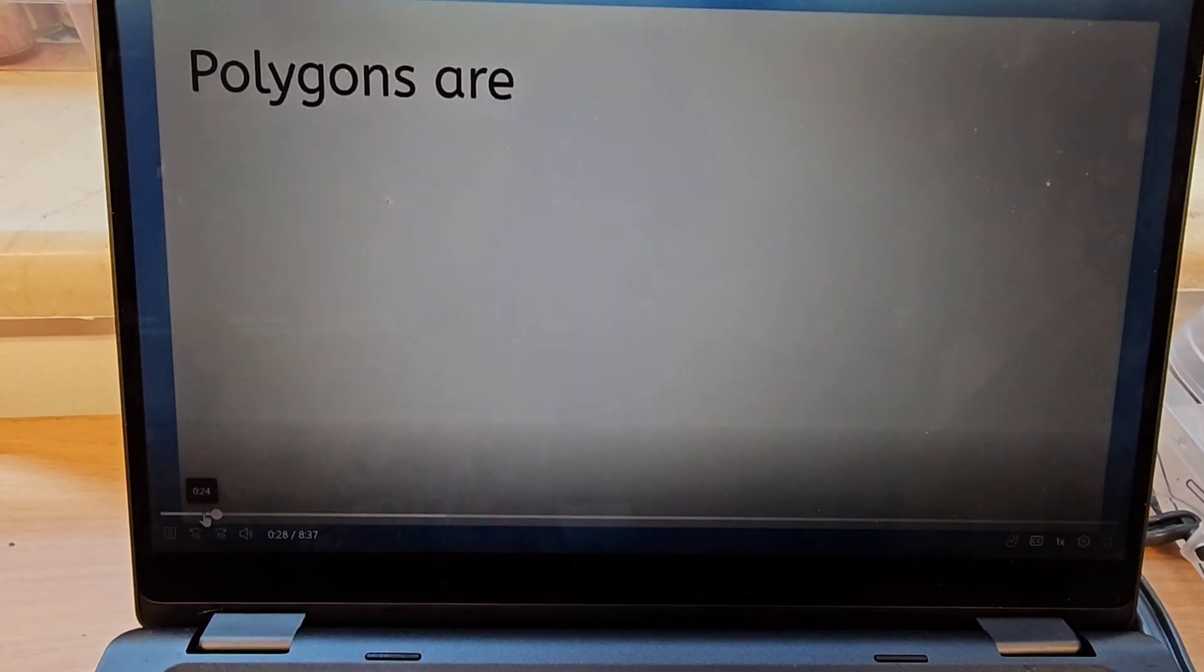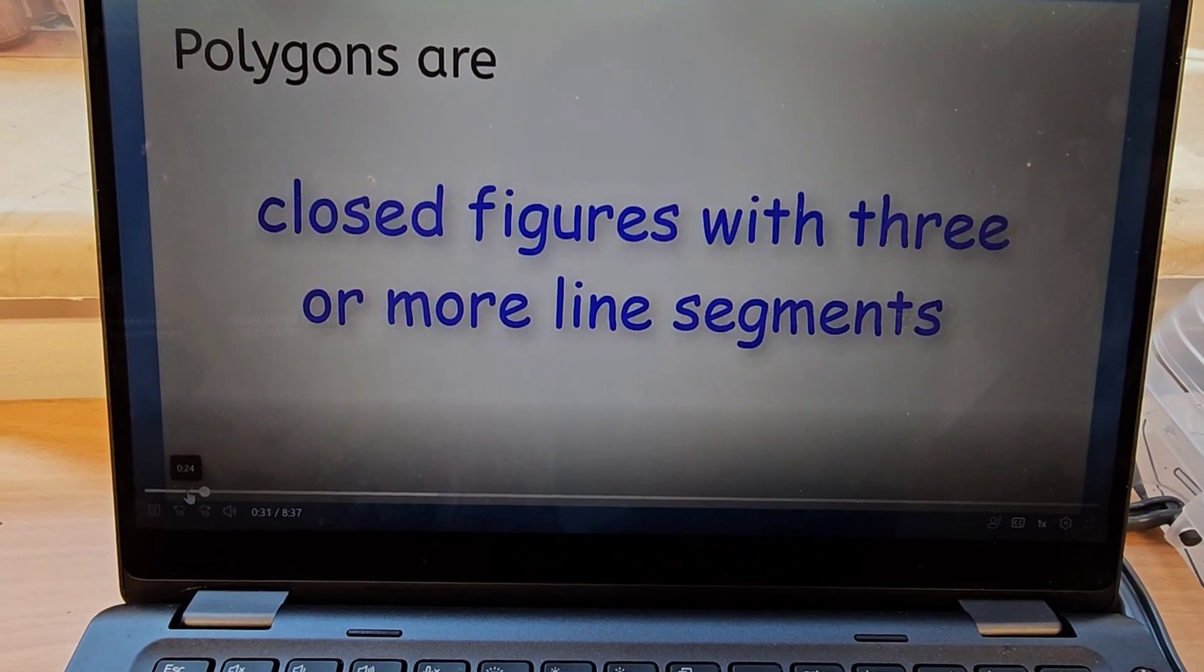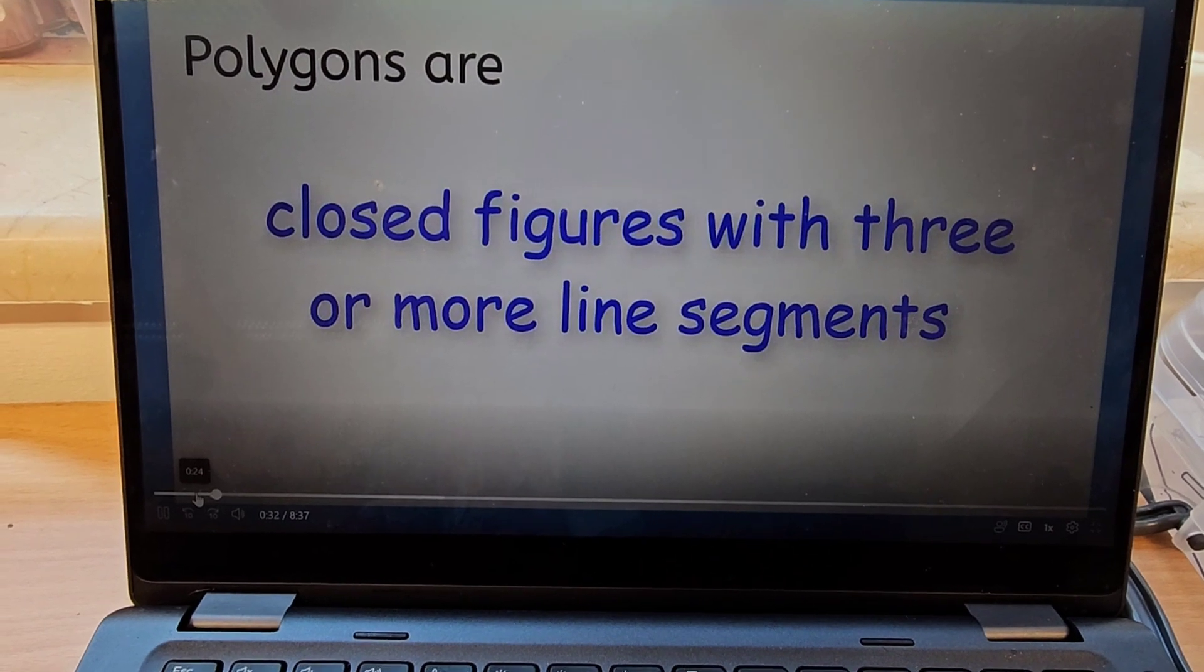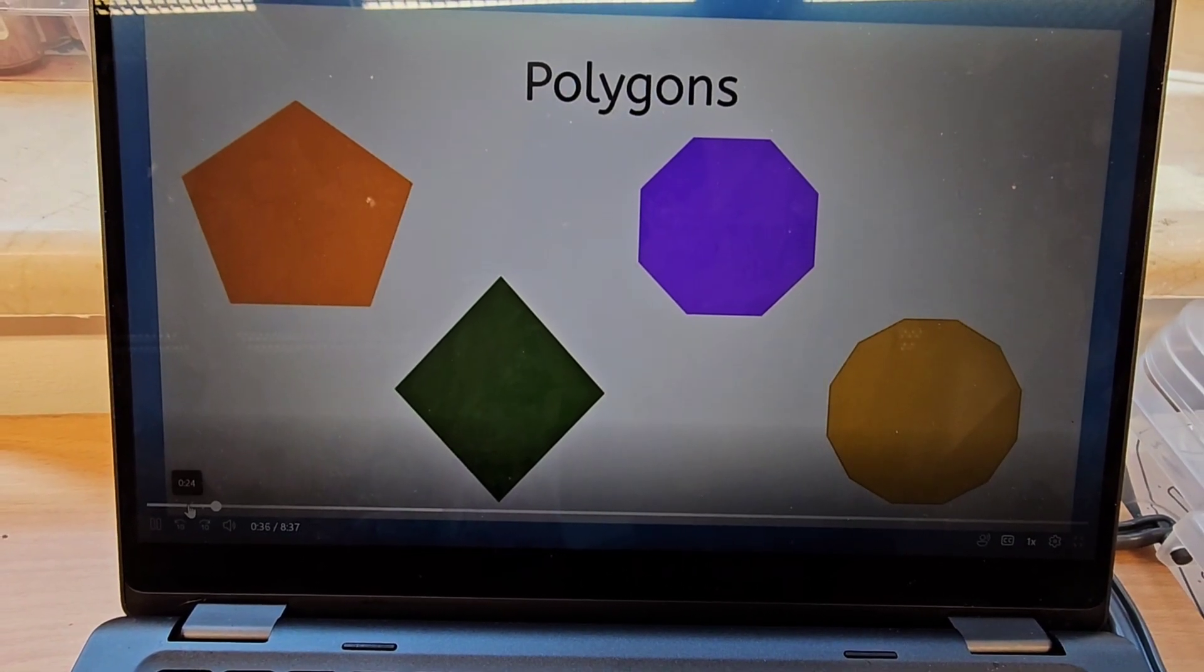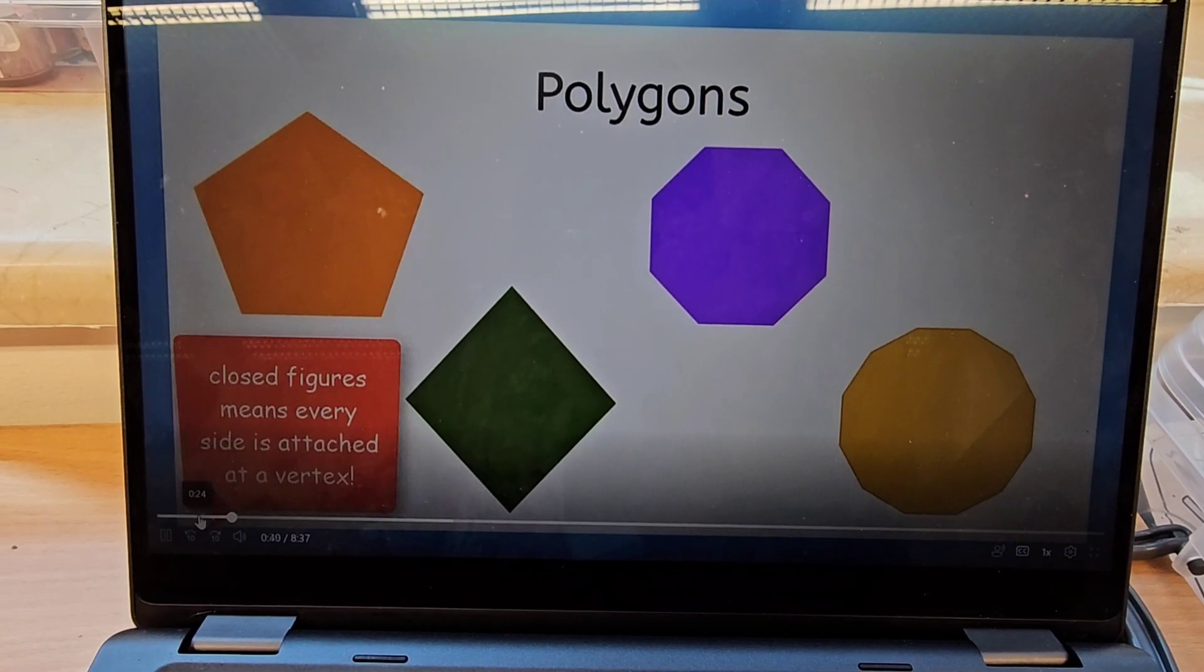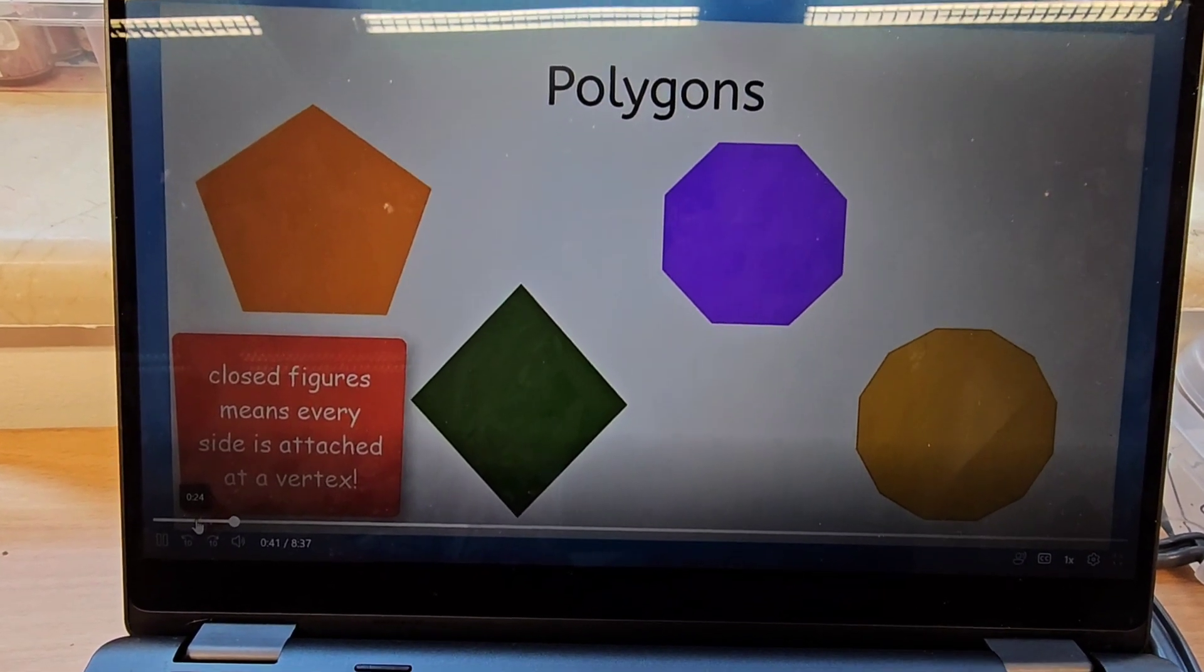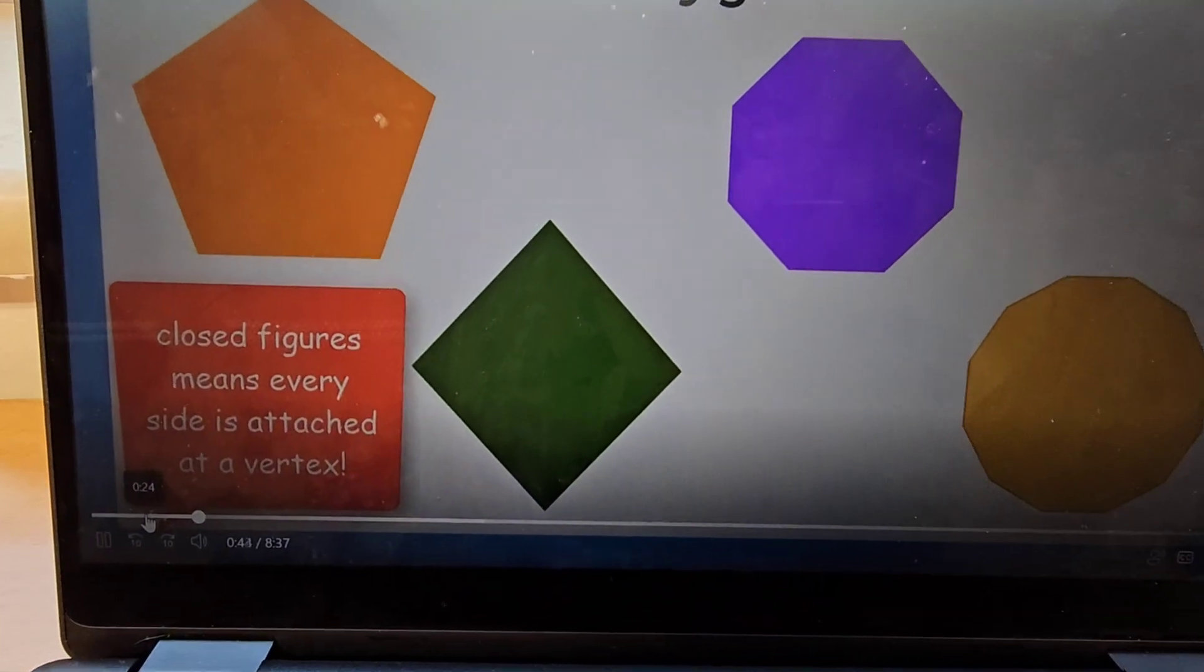Polygons are closed figures with three or more line segments. These shapes are all examples of polygons. Notice that all of these are closed figures. That means that all of the sides are attached at a vertex.